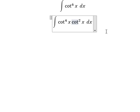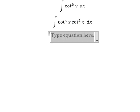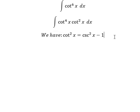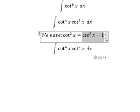Next, we have the formula here: cotangent squared x equals cosecant squared x minus one. So we change this one by this one.